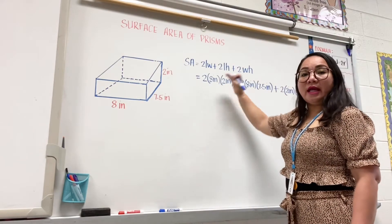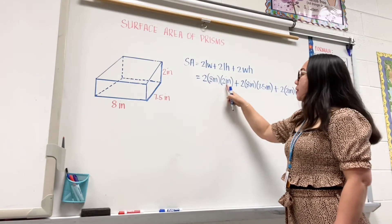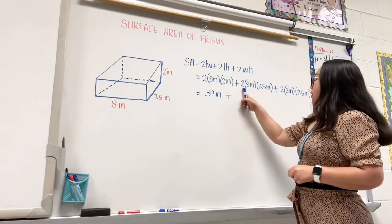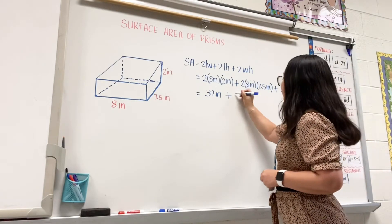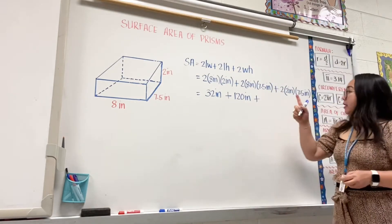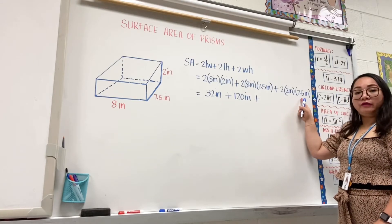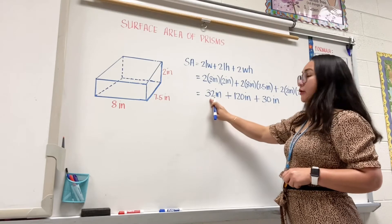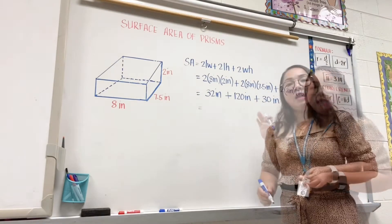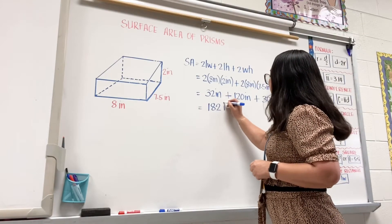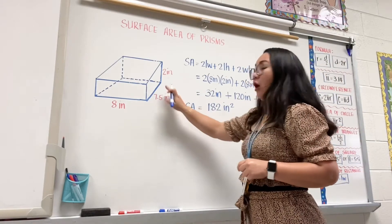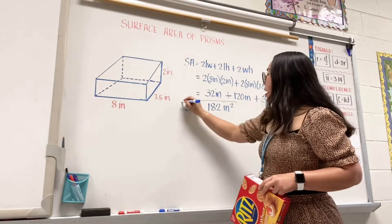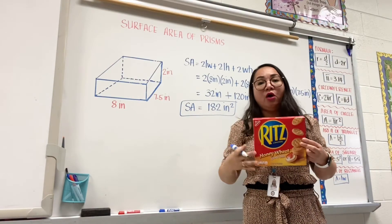Now I will multiply and add them together. Two times eight is sixteen, times two is thirty-two. Then two times eight is sixteen, times seven and five-tenths is one hundred twenty. Last part: two times two is four, times seven and five-tenths is thirty. Adding all together: thirty-two plus one hundred twenty plus thirty equals one hundred eighty-two inches squared. So this is the surface area of this Ritz box, and now I know how much wrapper I need to cover the whole box.